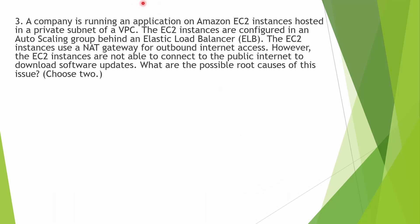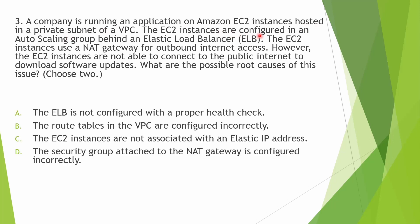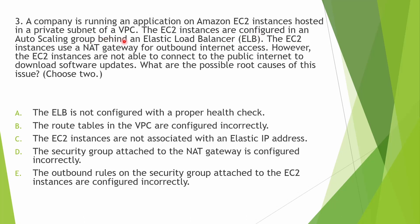A company is running an application on Amazon EC2 instances hosted in a private subnet of a VPC. The EC2 instances are configured in an auto scaling group behind an ELB and use a NAT gateway for outbound internet access. However, the EC2 instances are not able to connect to the public subnet to download software updates. What are the possible root causes? The options are: ELB not configured with proper health check; route tables in the VPC not configured correctly; EC2 instances not associated with an elastic IP; security group on NAT gateway configured incorrectly; or outbound rules on the security group attached to EC2 instances configured incorrectly.